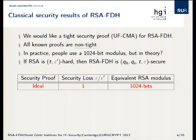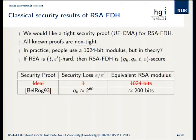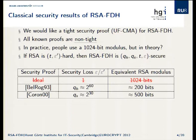So what do we have? Originally, Bellare and Rogaway had a proof with loss on the order of the number of hash queries, which is about 2^60. That means equivalently it's about as secure as inverting RSA with a 200-bit modulus, which isn't exactly ideal. Coron in 2000 improved it and got it down to 2^30, which is the number of signature queries, getting us to about a 500-bit equivalent modulus — again, not ideal.